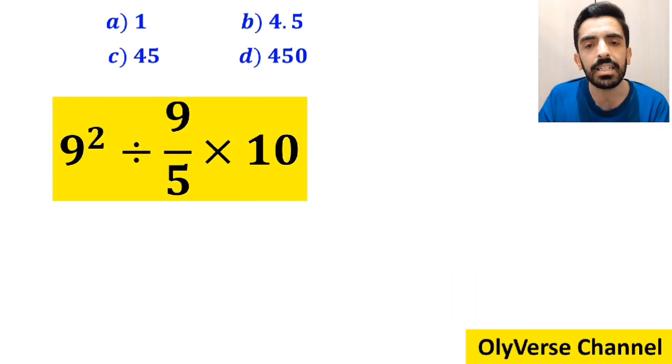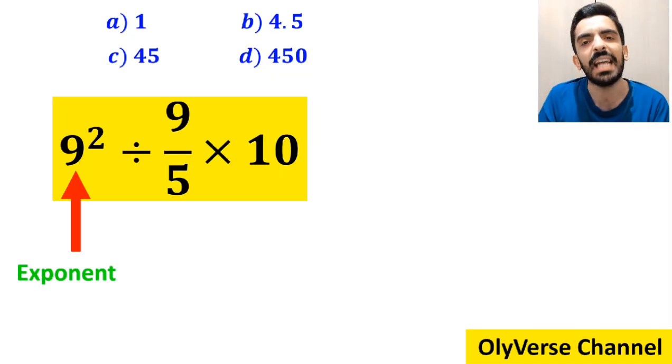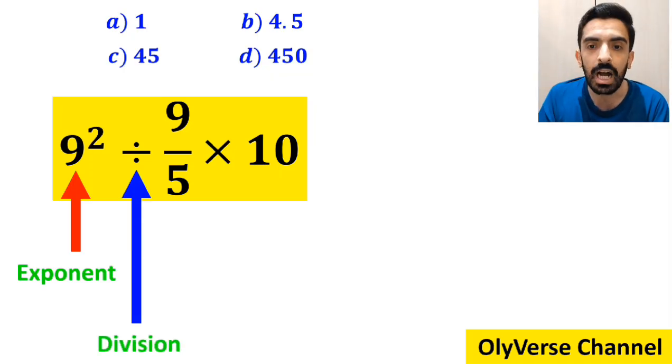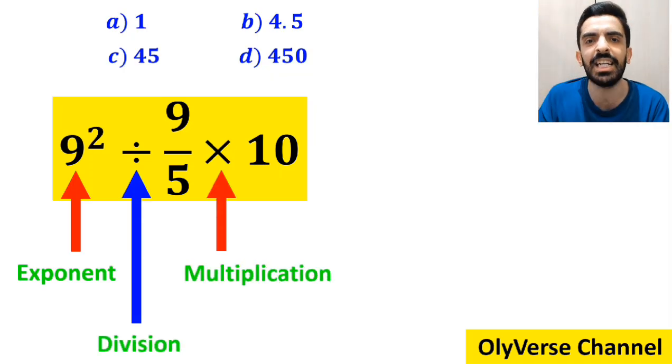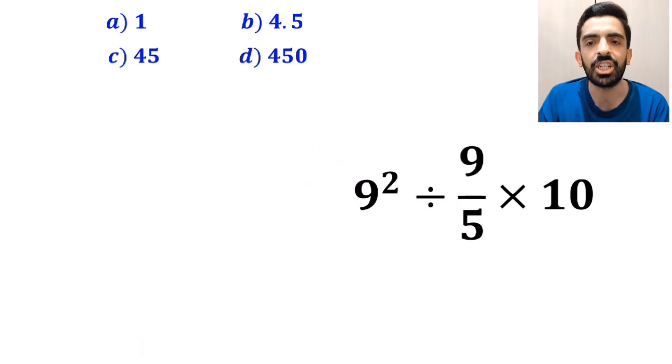As you can see on the screen, in this expression, first we have an exponent, then a division sign, and finally a multiplication. To solve this question, we must follow the PEMDAS rule.